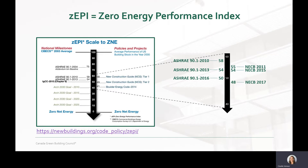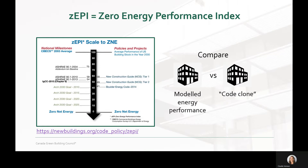You can see here that NECB version 2015 has a ZEPI score of 54, and the more stringent NECB version 2017 is closer to zero net energy, so it has a lower ZEPI score at 48. What this means is that if you know how your building performs compared to the NECB or ASHRAE 90.1 standard, you can calculate the ZEPI score for your building.